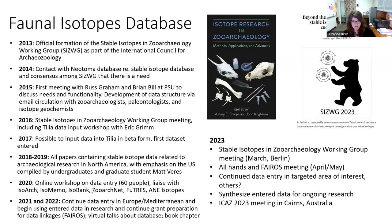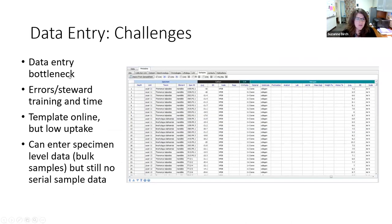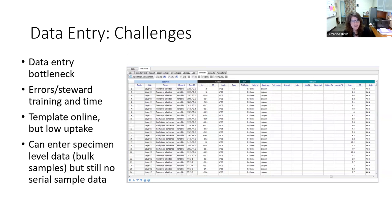In terms of data entry challenges — similar to what others have mentioned — one big issue is that specimen-level data entry is extremely buggy in Tilia. Even when we think we're done, we've only just begun. There are a lot of errors we have to go back and correct and deal with before we can even get to the isotope-level data.